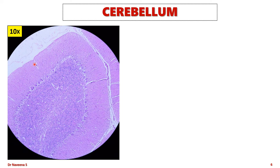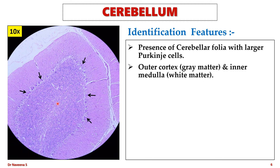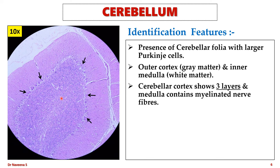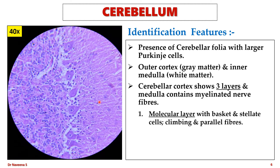Cerebellum. Here is the slide seen under low magnification. It is identified by the presence of cerebellar folia with larger Purkinje cells. Cerebellum shows outer cortex or grey matter and inner medulla or white matter. Cells within the cerebellar cortex are arranged in three layers, and the medulla contains myelinated nerve fibers. The outermost layer is called the molecular layer. Deep to that is the Purkinje cell layer, and the deepest layer is the granular layer. Under high magnification, the molecular layer shows smaller basket cells and larger stellate cells, along with climbing and parallel fibers.